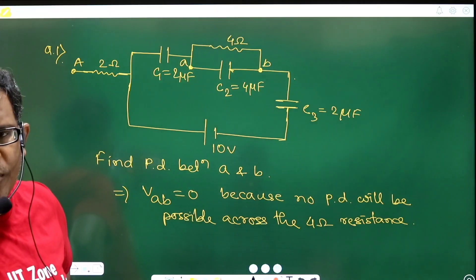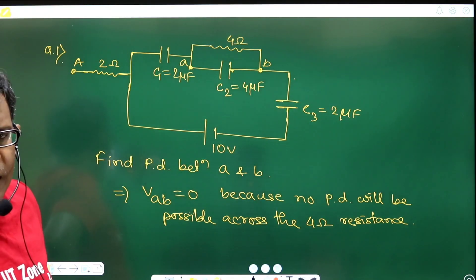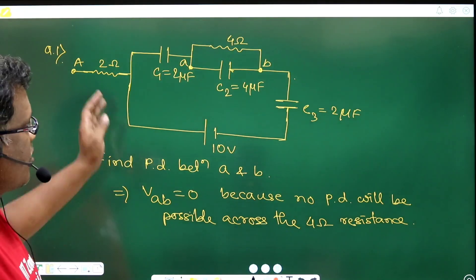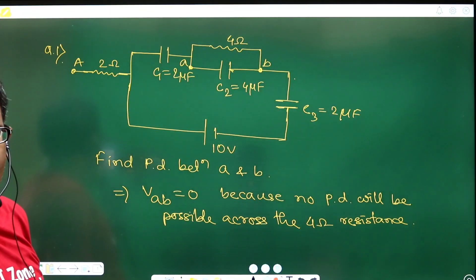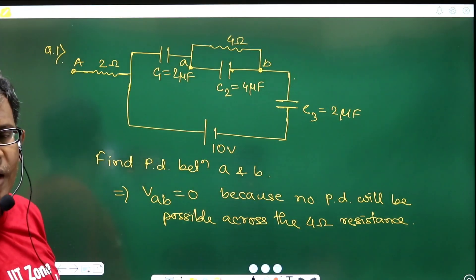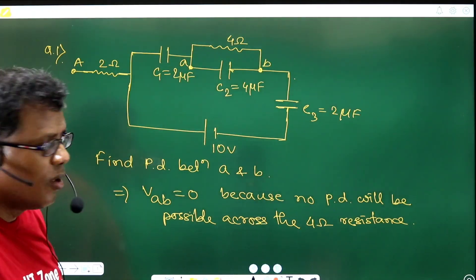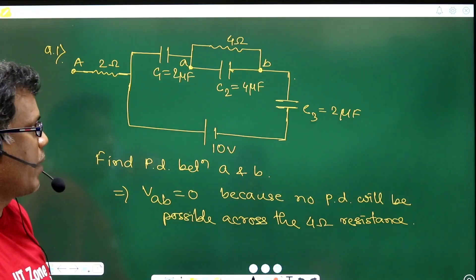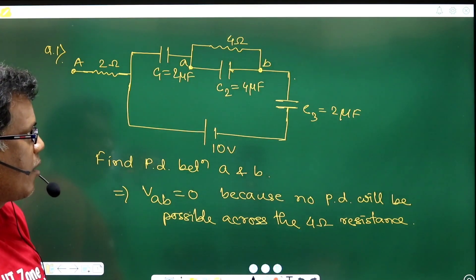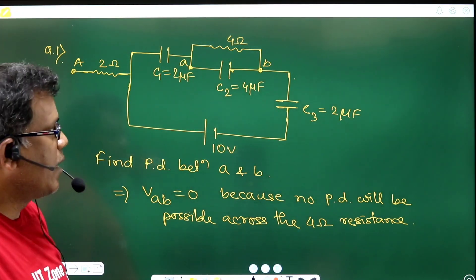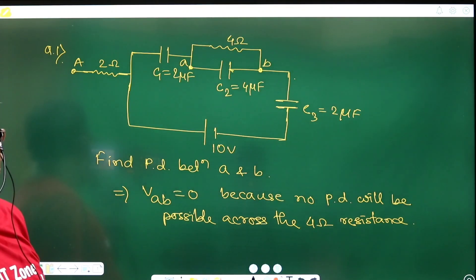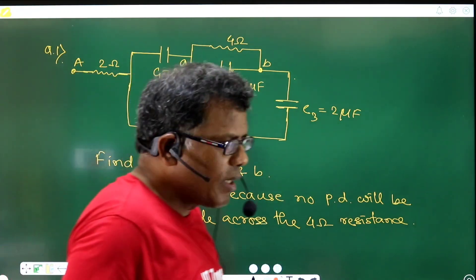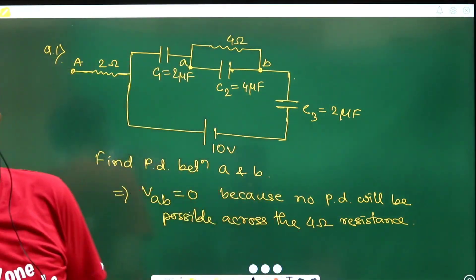Why? Because to have current flowing through 4 ohm, that should be the part of the charge which is first passing through C1, that can only further divide into parallel branches as we normally think about it. But the thing is that at steady state, C1 will not allow the flow of charge through it. Of course not. So rate of flow of charge will be ceased. That means no current will be allowed to flow through 4 ohm, and hence the 4 ohm resistance will just become a simple wire.